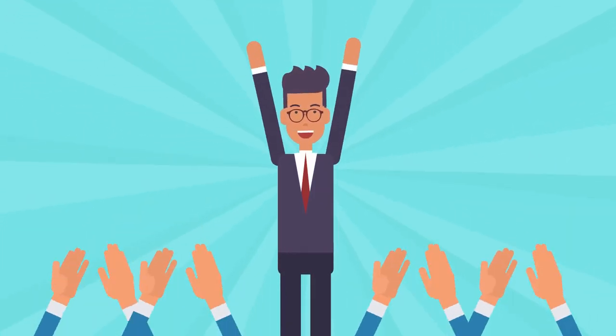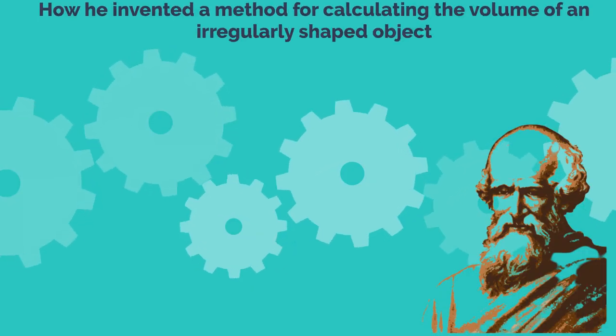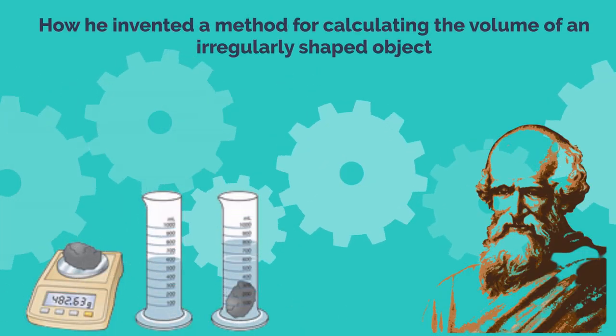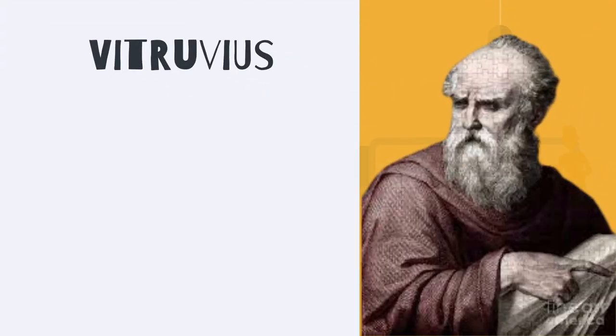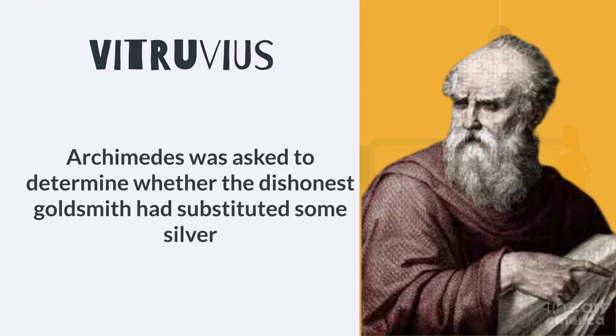The most well-known story about Archimedes is about how he invented a method for calculating the volume of an irregularly shaped object. According to Vitruvius, Archimedes was asked to determine whether the dishonest goldsmith had substituted some silver.